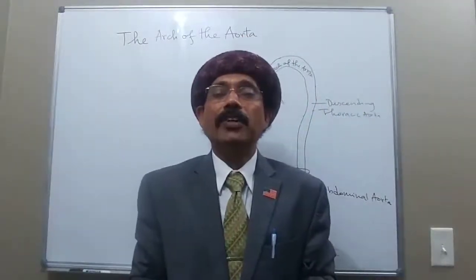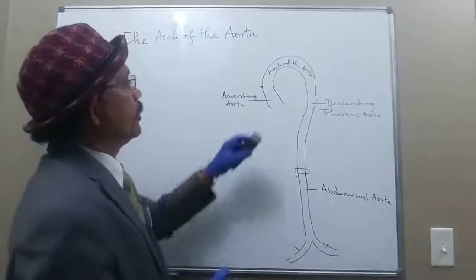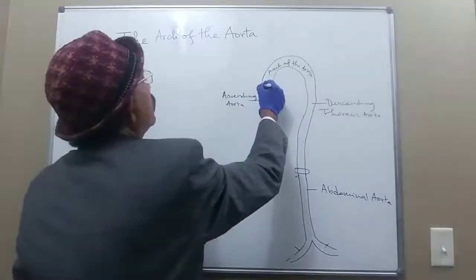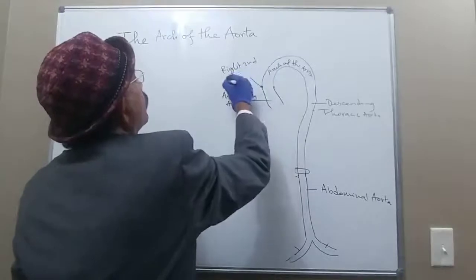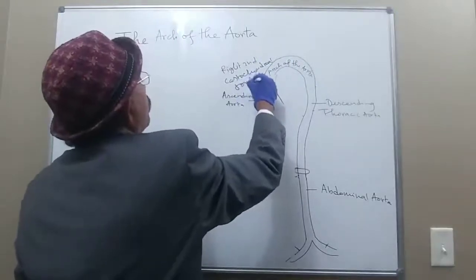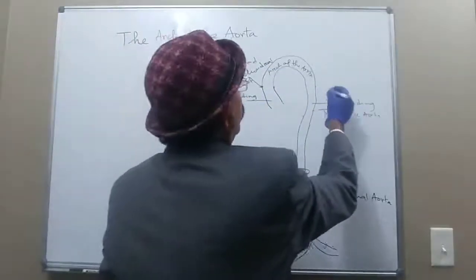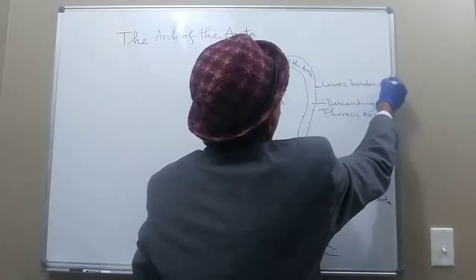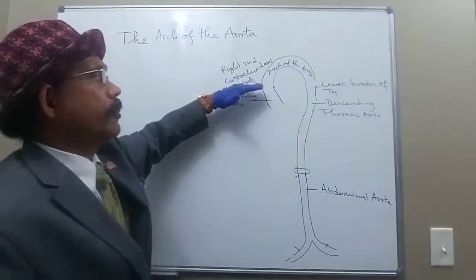Hello, my name is Dr. Diwan S. Raja. Today I will discuss the anatomy of the arch of the aorta. The arch of the aorta is a continuation of the ascending aorta at the level of the right second costochondral joint. It goes up, arches posteriorly, and continues as the descending thoracic aorta at the level of the lower border of T4 thoracic vertebra — the same level as the right second costochondral joint.